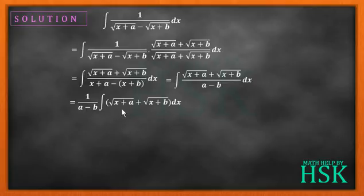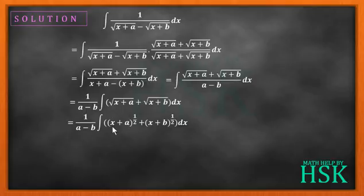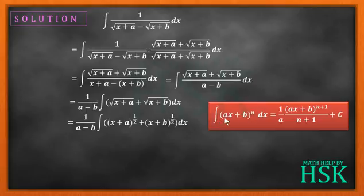Writing (a minus b) outside as 1 upon (a minus b), I rewrite square root of (x plus a) as (x plus a) to the power of 1/2, and square root of (x plus b) as (x plus b) to the power of 1/2. I'll apply the formula: the integral of (ax plus b) to the power n equals 1 upon a times (ax plus b) to the power (n plus 1) upon (n plus 1) plus C. Here the coefficient of x is 1, so it won't affect the result.